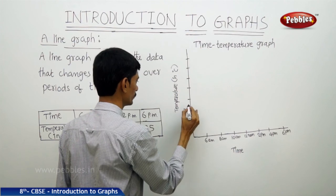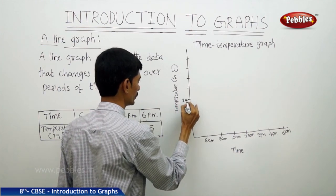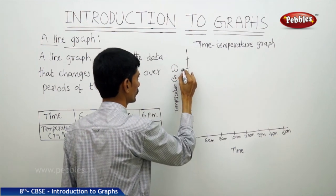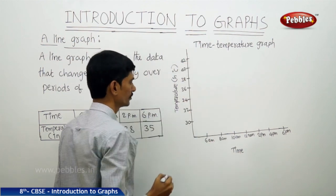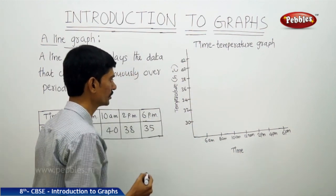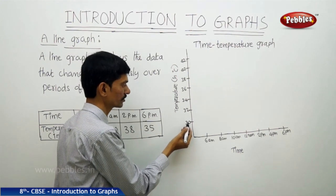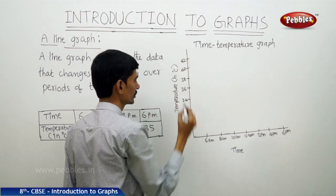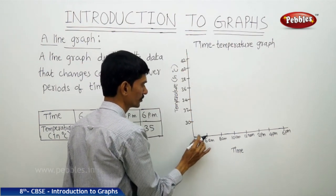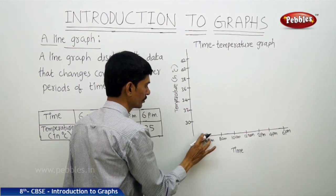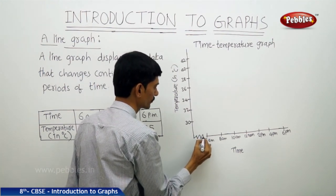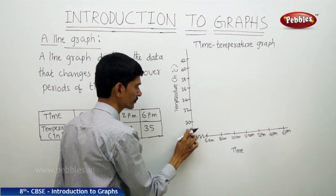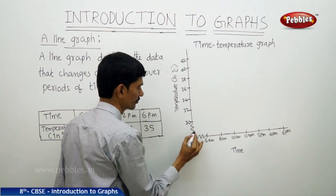On the y-axis we have taken the temperature in degrees centigrade: 30°C, then 32°C, then 34°C, 36°C, 38°C, 40°C, up to 42°C. We are not starting from 0, so we represent that with a jog line. Similarly, from 0 to 30 on the temperature axis we are not showing, so there is also a jog line.